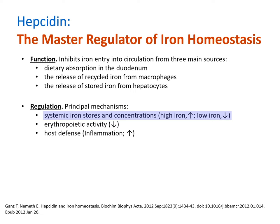In the opposite scenario, when plasma iron is low, hepcidin expression is suppressed, leading to an increase in iron entering circulation. In states of high erythropoietic demand, brought on by blood loss or hypoxia, hepcidin is down-regulated, allowing iron to flow to the bone marrow compartment for incorporation into new red blood cells.